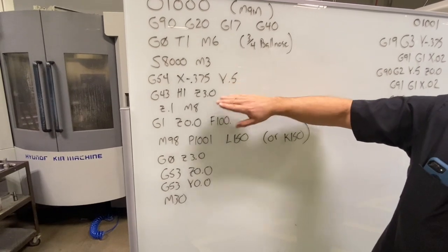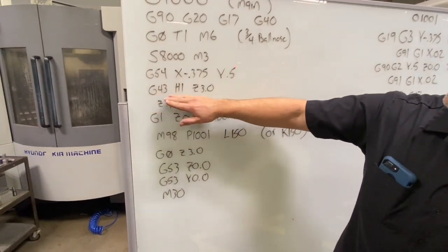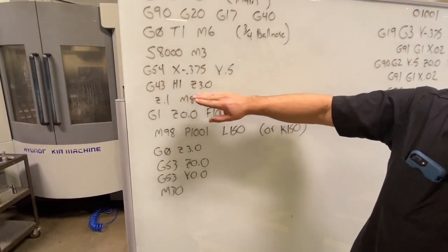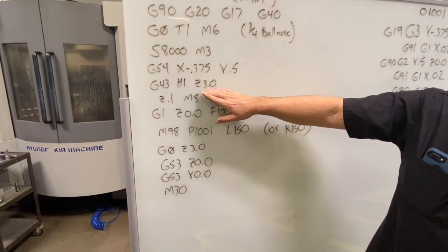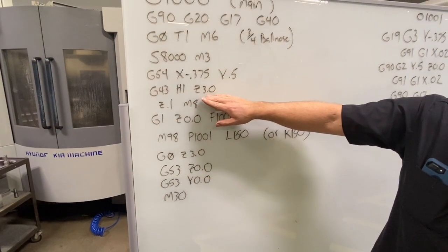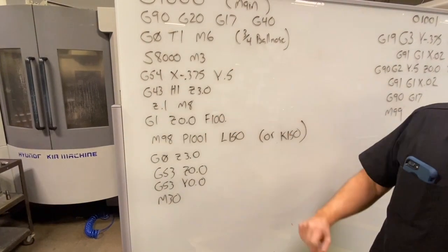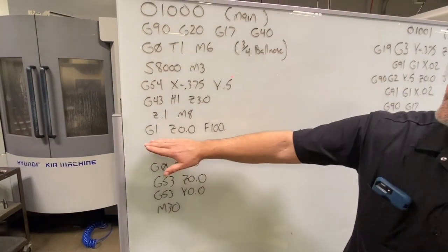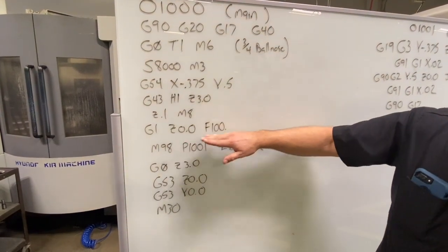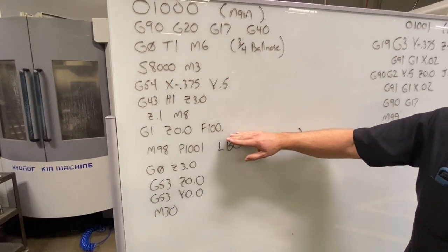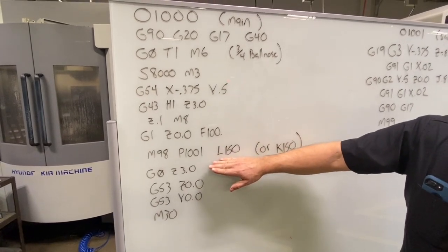And then I'm going to call for my height offset. I'm using tool one, so I'm using height offset one, and I move to a clearance plane three inches above the part. And then next I'll move to a feed plane at 0.1, turning my coolant on, and then I'm going to feed right down to Z zero, the top surface of the part, at 100 inches a minute.